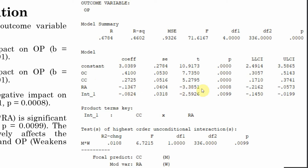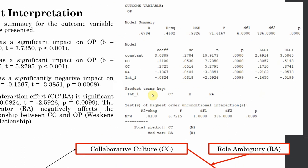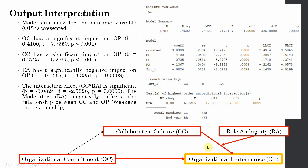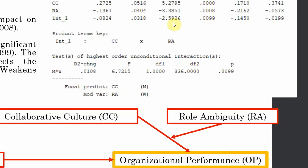The effect of role ambiguity on organizational performance is negative — the t-value is greater than 1.96, the p-value is less than 0.05, and there is no zero in the confidence interval. The interaction is also significant, indicating that role ambiguity does moderate this relationship. The negative sign indicates that the relationship between collaborative culture and organizational performance is negatively affected — role ambiguity dampens or weakens this relationship. The R-square change is also significant, meaning the interaction causes a significant change in the outcome variable.